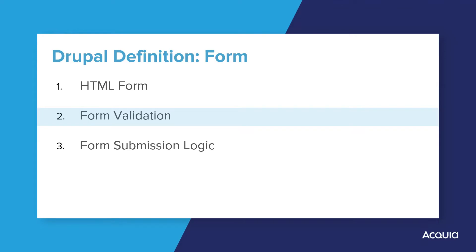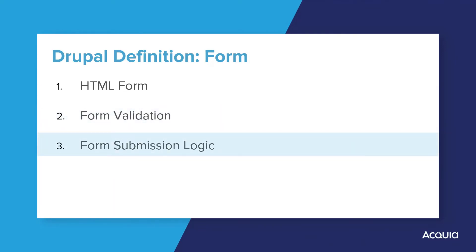For example, if a form displays an email address element for input, we can have the validation component make sure that the user's supplied data seems like a properly formatted email address. If it doesn't seem like the data is valid, Drupal presents an error message until the user provides valid data. If the data does seem valid, we go to the final component. The third component of a Drupal form handles the submission of the form by determining the logic of what happens on the server to process the user input data.